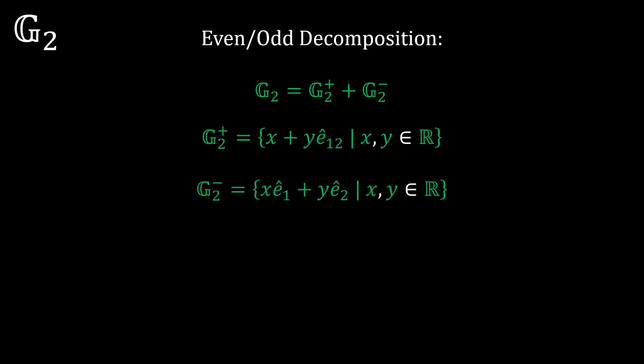Let's now decompose the g2 algebra into even and odd components. The even subalgebra is created by considering parts with no vectors, and the odd subalgebra is created by considering only the vectors. Let's then note something very cool. When you square the unit bivector, you get negative 1. So the even subalgebra is composed of scalars plus a multiple of an entity which squares to negative 1.